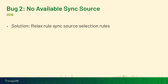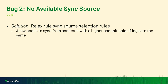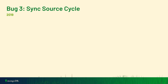As a solution, we relaxed the sync source selection rules. Whereas before we'd only pick someone if their log is strictly greater than your own, we slightly relaxed it to say: if your logs are the same, in a special case you can pick somebody as a sync source if their commit point is greater than your own — with the notion that eventually that commit point information would flow down to you.